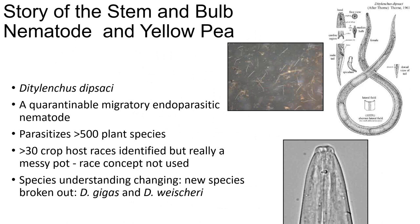This is the story of the stem and bulb nematode and yellow pea — our foray into nematodes on the prairies, started almost a decade ago with support from Saskatchewan, Alberta, and Manitoba pulse growers. This is about Ditylenchus dipsaci — our main character. Here is a nematode under a dissecting microscope — only a few millimeters in length. Here is the head area of the nematode with a darkening spot — there's actually a spear inside this head. The nematode pushes this spear out to poke into plants and siphon out the plant contents of xylem, phloem, and cells.